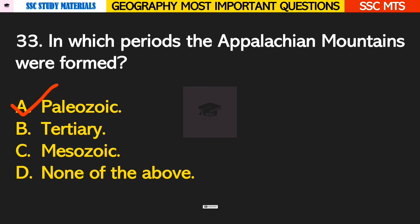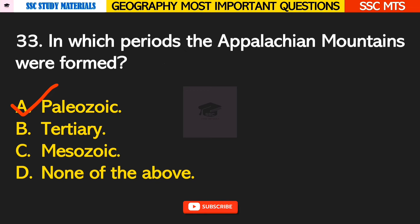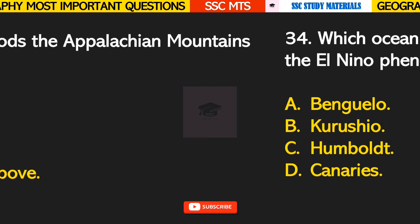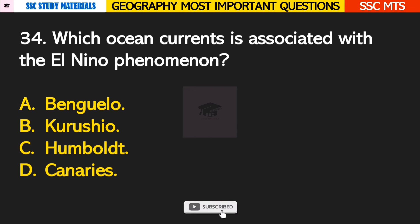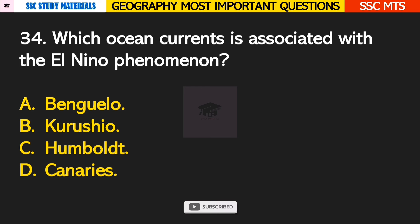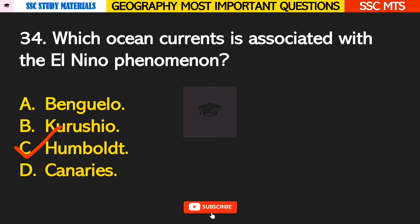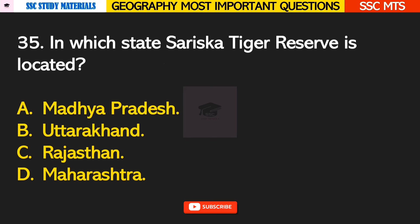Question number 33: in which period were the Appalachian Mountains formed? Answer A — they were formed during the Paleozoic era. Question number 34: which ocean current is associated with the El Niño phenomenon? Answer C — Humboldt.